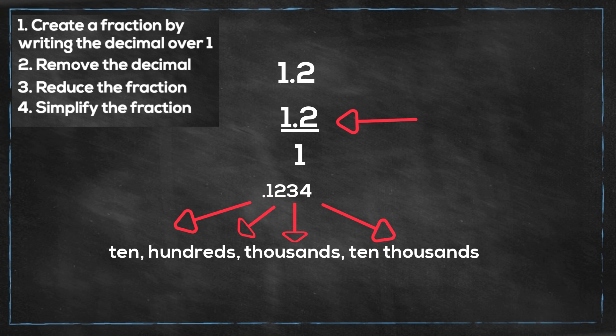Since we only have one number to the right of the decimal, we will multiply both the numerator and the denominator by 10.